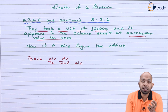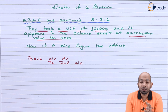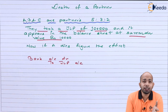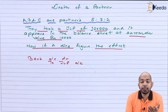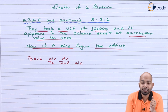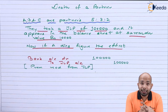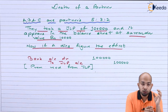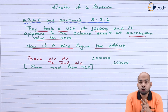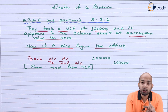We are absolutely talking about death in this case. The question mentions: if A dies, then what is the effect? The first entry that will be passed when A dies is the maturity amount that is supposed to be received — that means 1 lakh rupees. So the journal entry is: Bank Account debit to Joint Life Policy Account, which is mentioned as 1 lakh rupees.